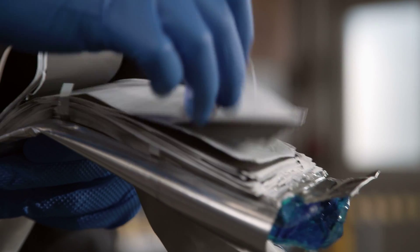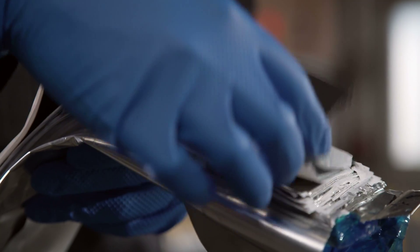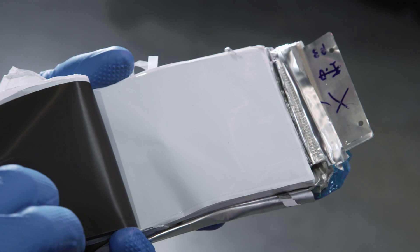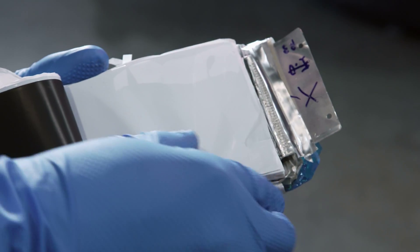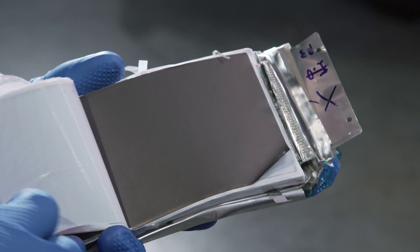These thin electrode foils are what store the energy for an electric car. An aluminum foil with cathode materials is set next to a white separator, and then a copper foil with graphite, and so on and so forth.